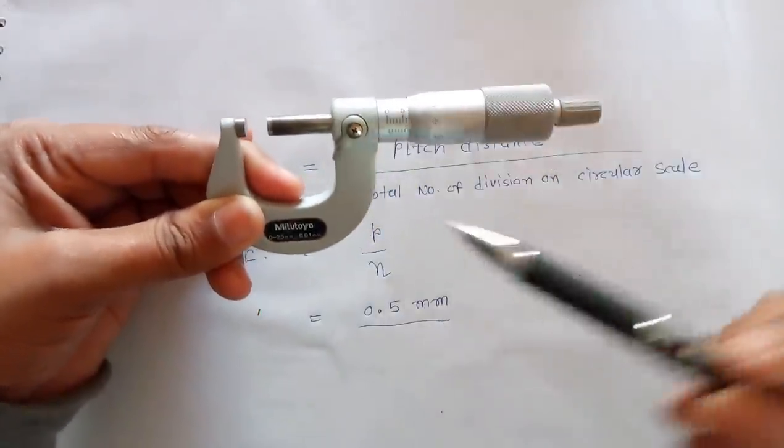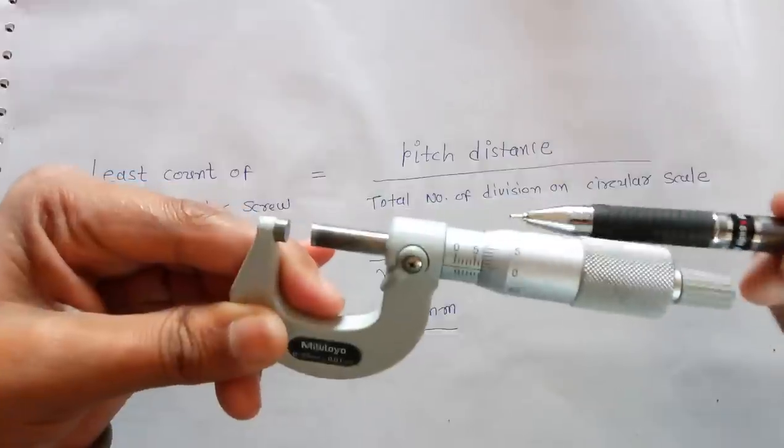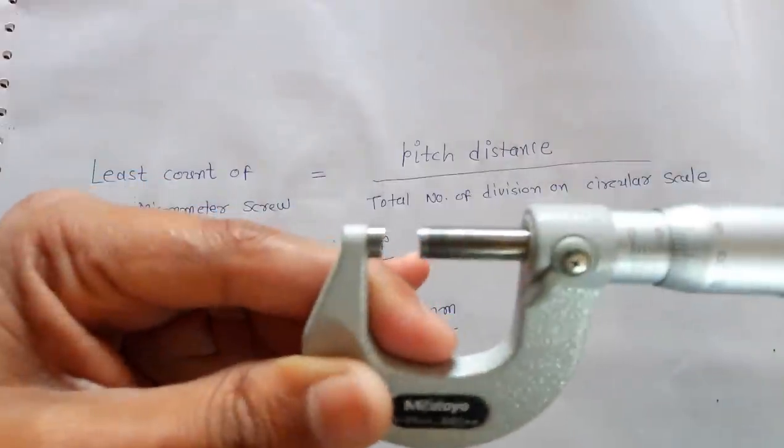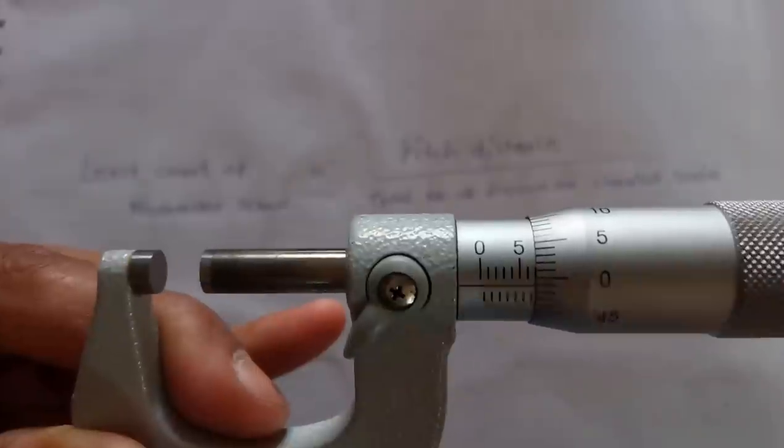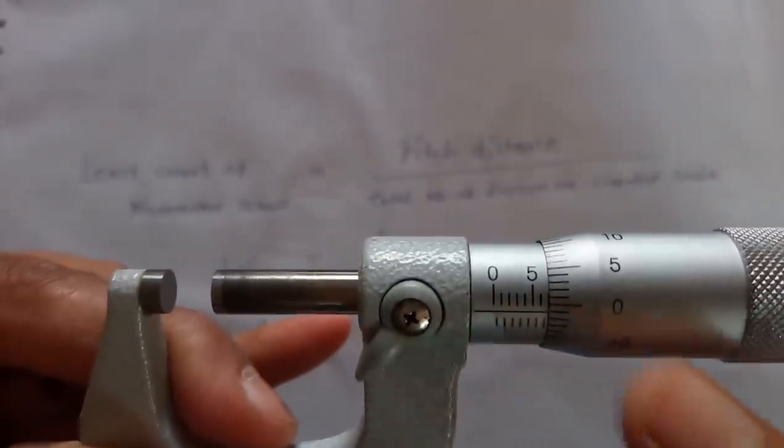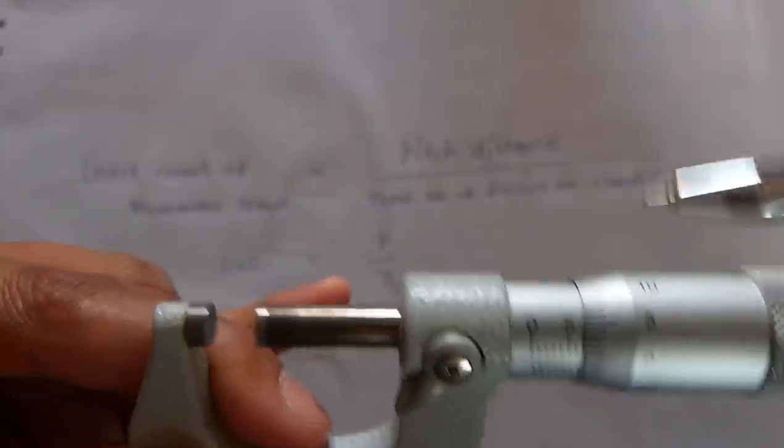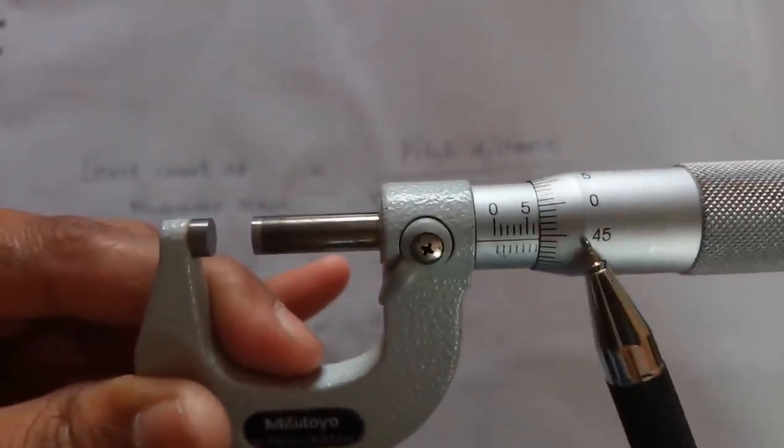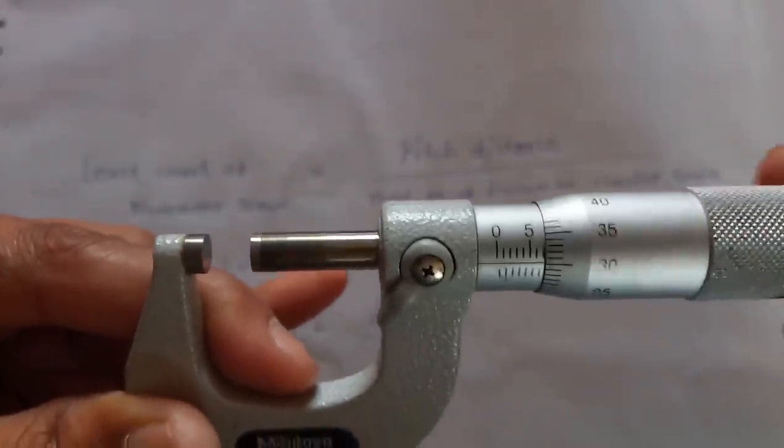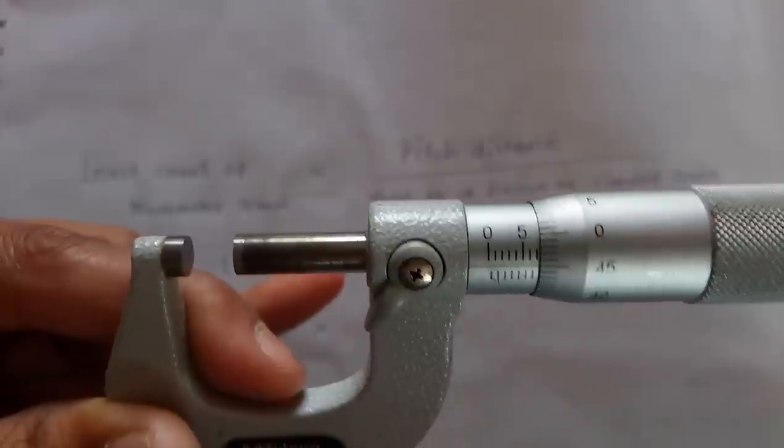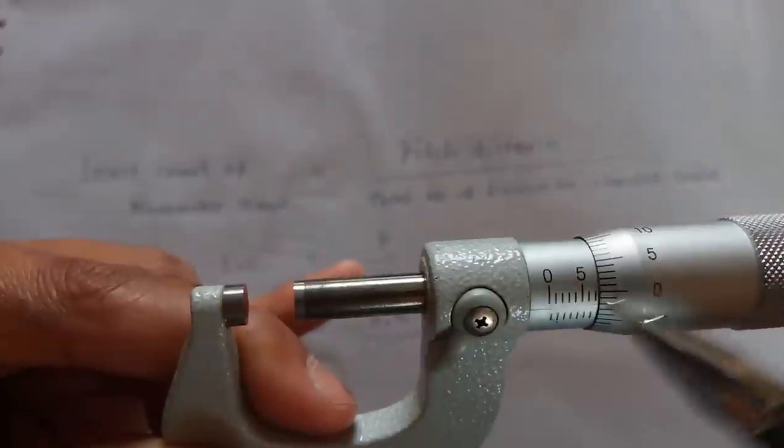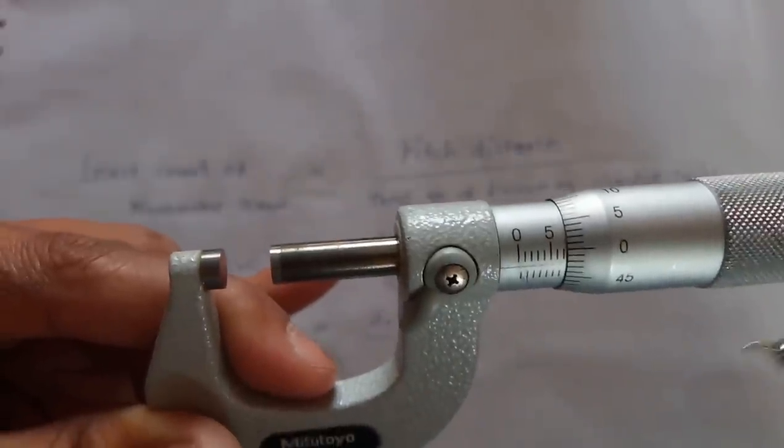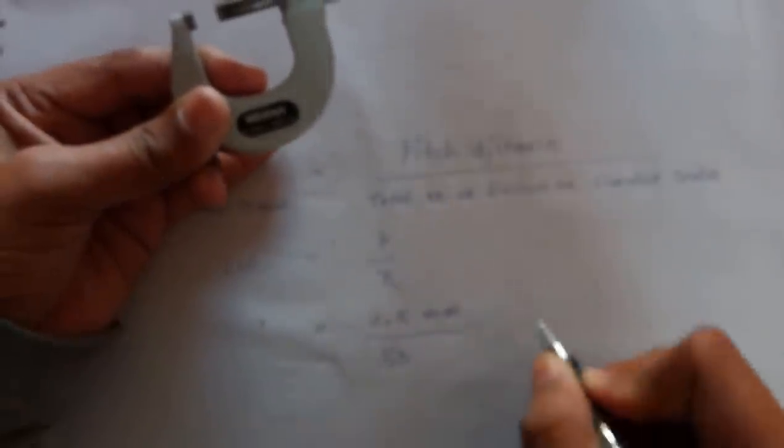Now total number of division on circular scale. You can see this. This is 0, 5, 10, 45, 46, 47, 48, 49. Means 0 to 49 division, 49 marks. Means 50 divisions. The total number of division on circular scale is equal to 50.